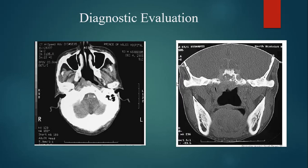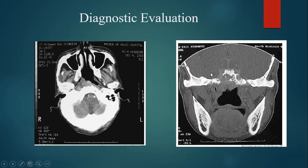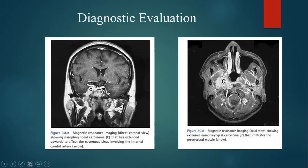This CT scan picture shows the tumor present inside the nasopharynx, with the maxillary sinus, inferior turbinate, and nasal septum visible. Here you can see erosion of the skull base with the tumor probably going into the cavernous sinus. This MRI picture shows a coronal section and a sagittal section.